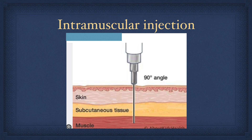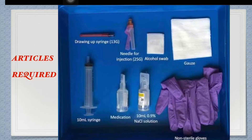Intramuscular injection means a drug is injected into deep muscle tissue. Let's check the articles required. For most injections, these are the articles required. The needle size and the syringe size may vary depending upon the type of injection, type of patient, and type of medication.